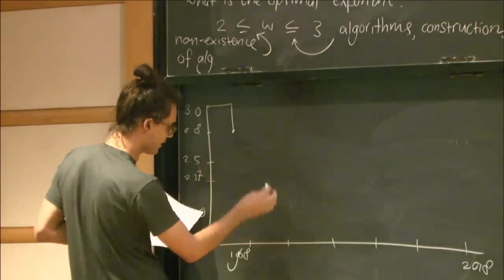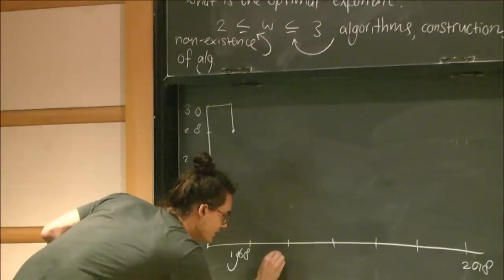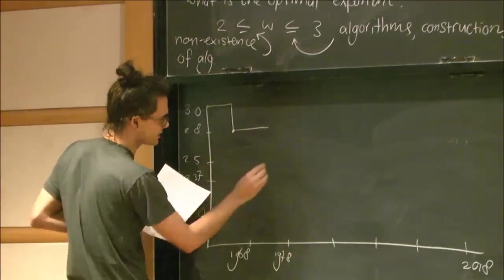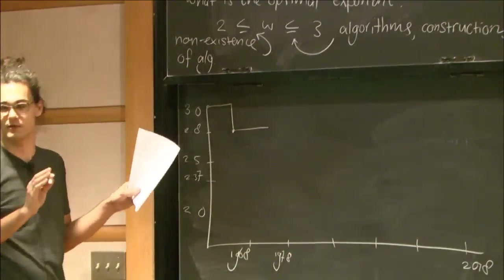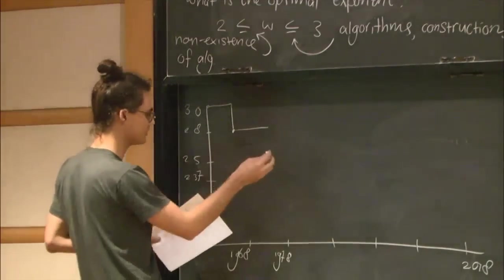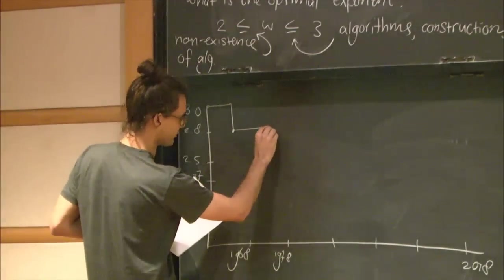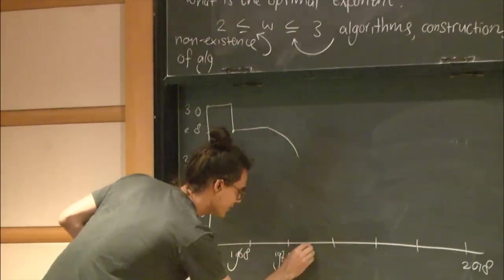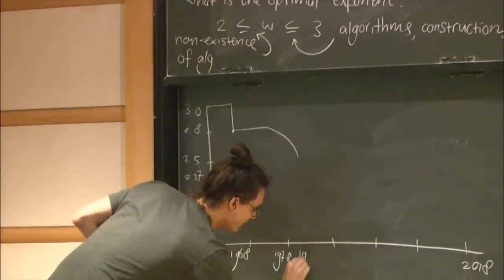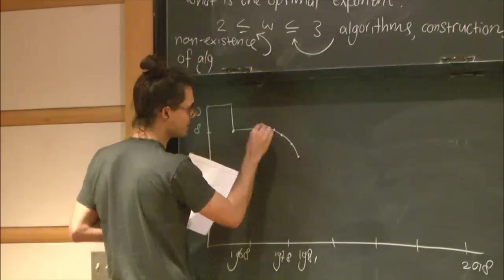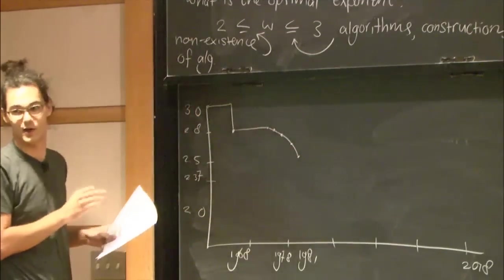And then, so not much happened until 1978. And in 1978, lots of things happened. So a large group of people improved and improved and improved the exponent to something like 2.5. So I draw a curve. It was not a curve, of course, but I cannot. Yeah. So this is a whole bunch of papers, moving it down to like 2.5.